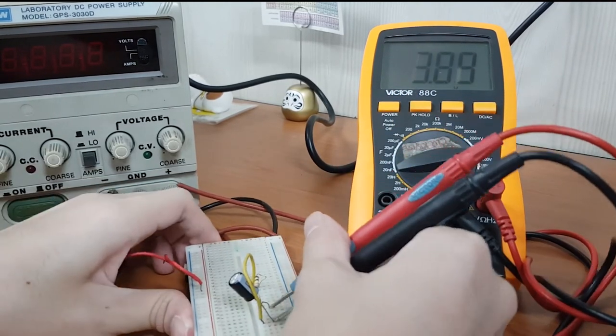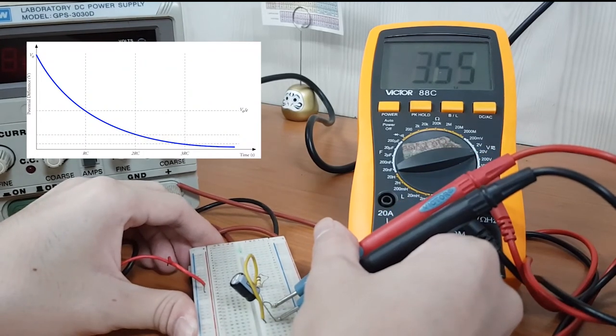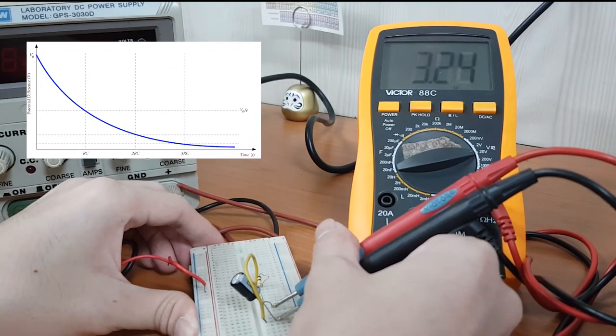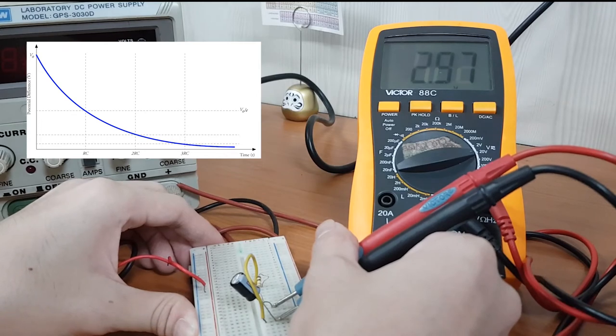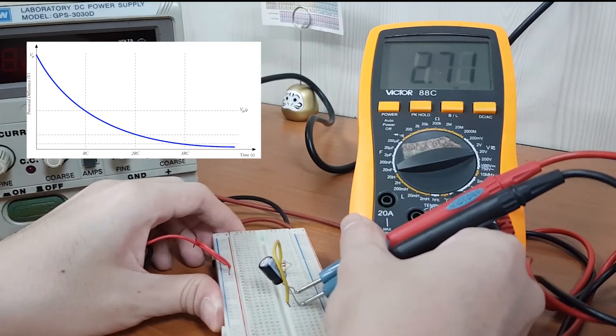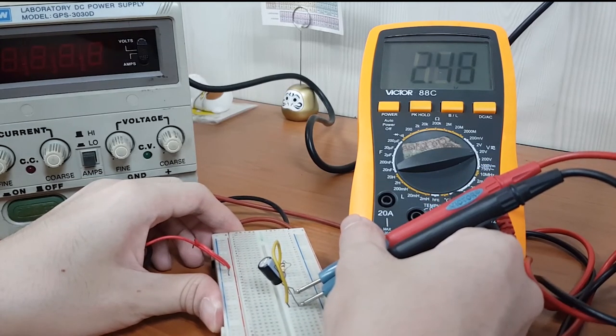And now we can observe the voltage across the capacitor. It is now discharging and the voltage is now decreasing as a function of time.